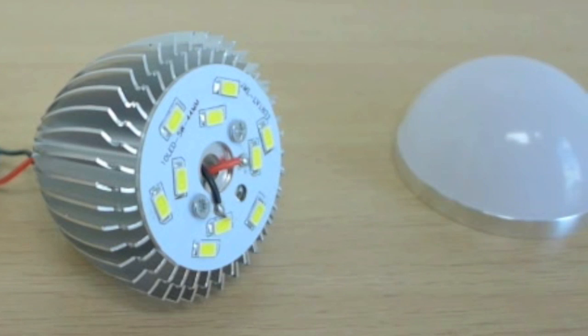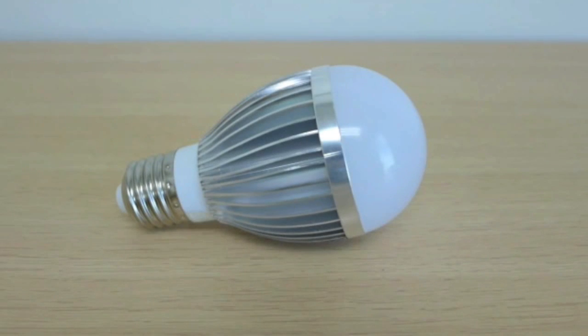The cover for an A series LED bulb is usually just a frosted dome. It serves to keep the LED chips away from the elements.